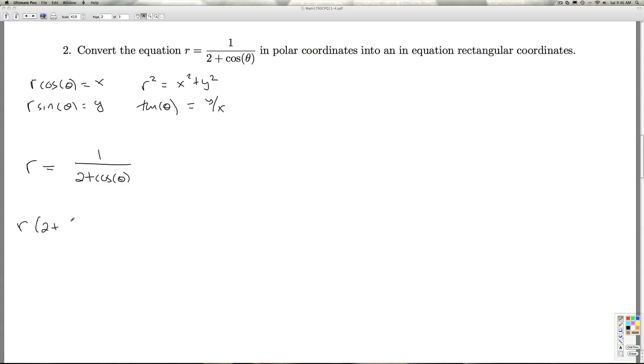We can multiply both sides by 2 plus cosine theta, distribute through the r, and if I look at this, I see an r cosine theta, and I'm on the lookout for an r cosine theta, because that's x.